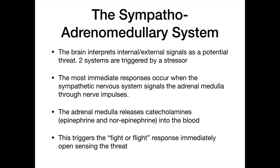To summarize: the brain interprets internal and external signals as a potential threat, triggering both the sympatho-adrenal medullary system and the HPA axis. The most immediate response occurs when the sympathetic nervous system signals the adrenal medulla through nerve impulses — almost instantaneous. You don't stand there thinking about it; your brain immediately knows it's a threat and you're already running. The adrenal medulla releases epinephrine and norepinephrine — also called adrenaline and noradrenaline — into the blood.